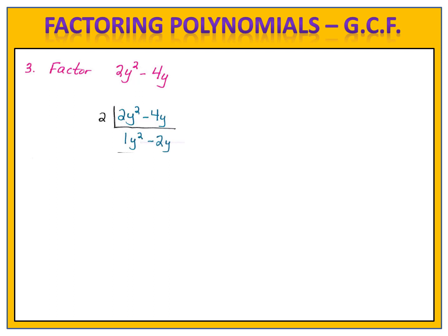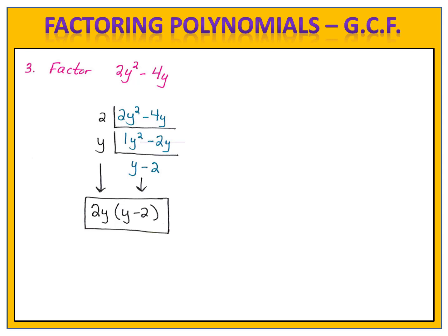I check the numbers 1 and 2, and see that there is no number larger than 1 that divides both. I now set my sights on the variables. I notice that both terms have y's. The first term has y to the second power, and the second term has y to the first power. The smallest value is y to the first, so I simply factor out a y and divide both terms. y squared divided by y is simply y, and minus 2y divided by y is simply minus 2. There are no further amounts to factor out, so I write my polynomial in factored form with the 2y on the outside of the parentheses and the y minus 2 on the inside.